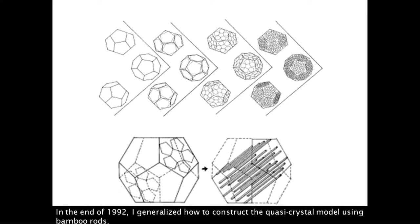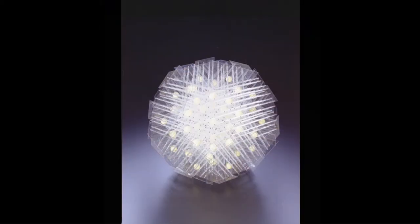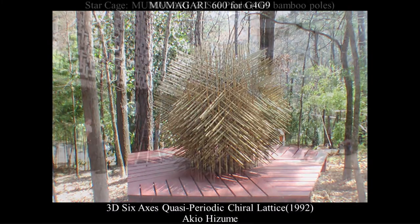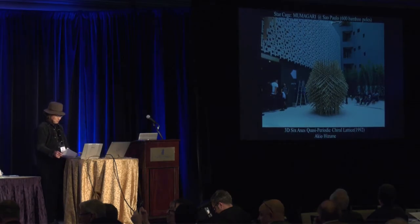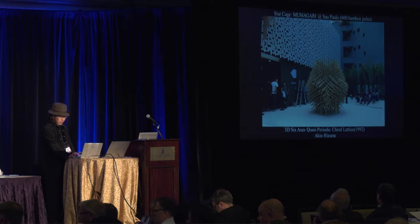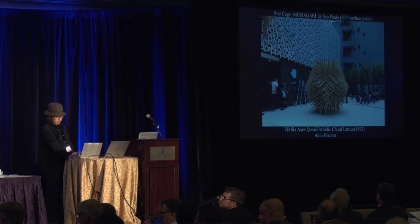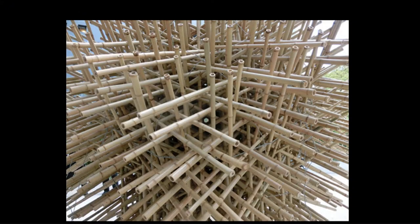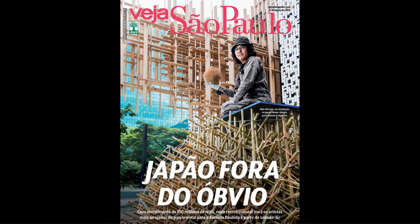At the end of 1992, I generalized how to construct the cross periodic model using bamboo — this is 200 bamboo rods. At G4G9, I built a memory structure of 600 rods at Tom Rogers and Sarah's house. Then last year I was invited by the Japan House in São Paulo, Brazil, where I made a quasi-crystal sculpture using 10-feet-long bamboo poles with five-fold symmetry and three-fold symmetry. I was on the cover of a Brazilian magazine.